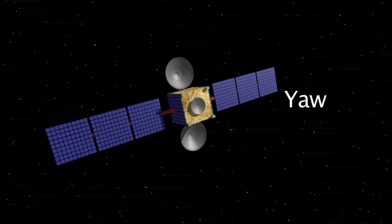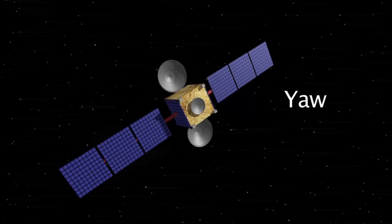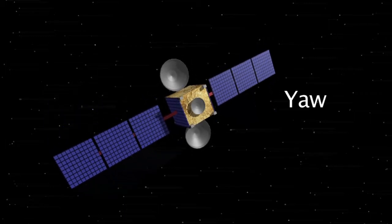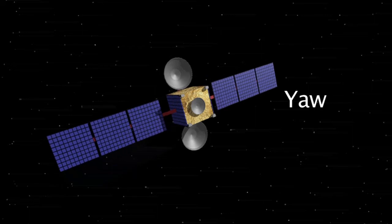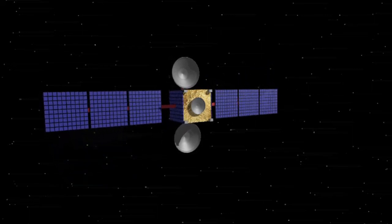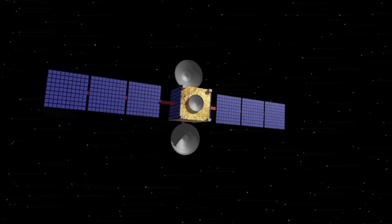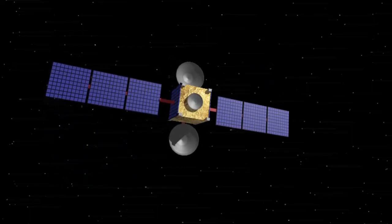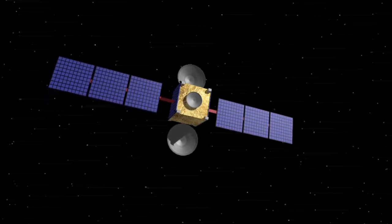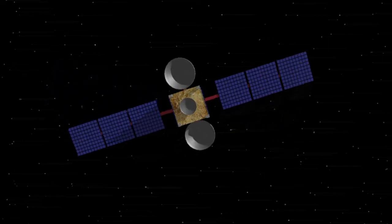This area is called the satellite graveyard, and several hundred satellites reside there, where they spin and tumble out of control as they have no more fuel left to control themselves.